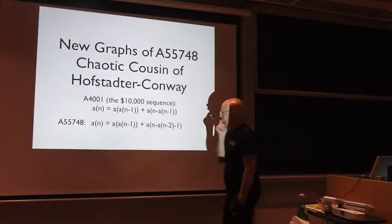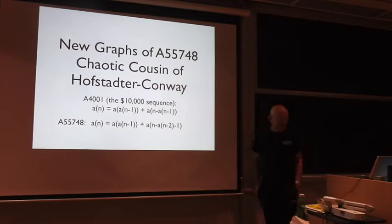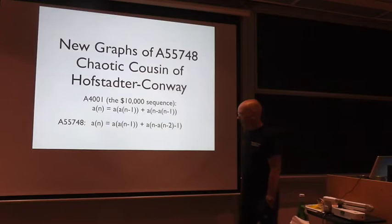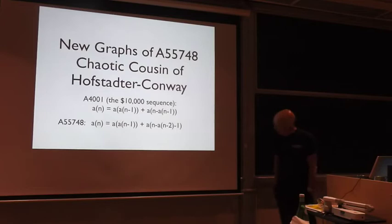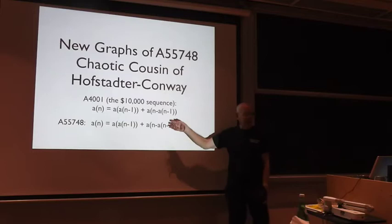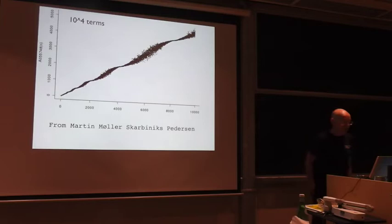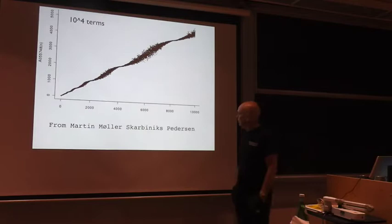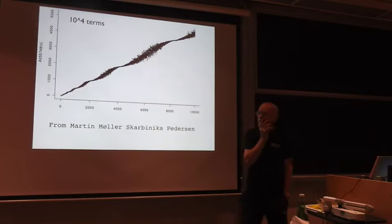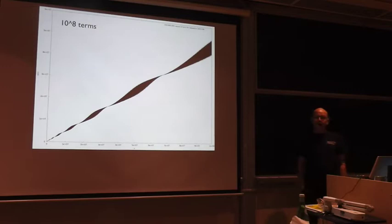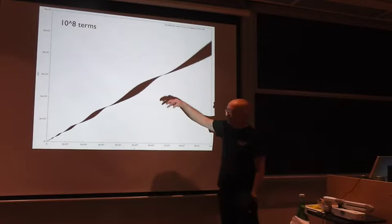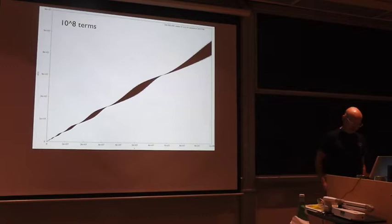But there's another one related to that, described in a paper called The Chaotic Cousin of the Hofstadter-Conway sequence, which is defined by A of n is A of A of n minus 1 plus A of n minus A of n minus 2 minus 1. Obviously you could adjust this in many ways, but this one was a particularly interesting one. And so the other day Martin Pedersen computed 10,000 terms of this and produced this graph, which I thought was quite remarkable. So I said could you produce some more? And he came up with this. Now there's something going on there. What's this twist?